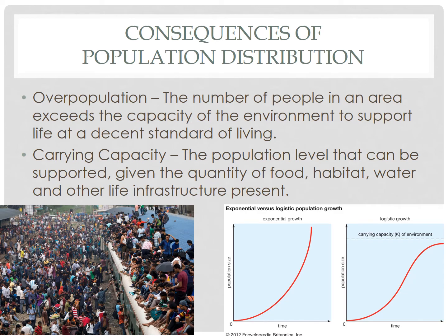Hello Human Geographers, we are back at it again this evening. Tonight, we are going to look at the consequences of the distribution of our population. Let's start with perhaps the most serious consequence, and that is overpopulation.